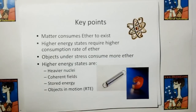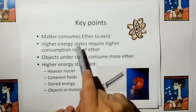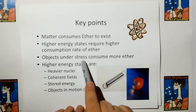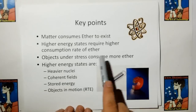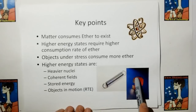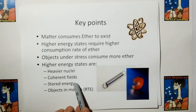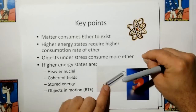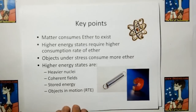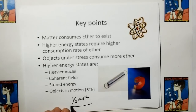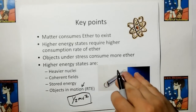Key points: matter consumes ether to exist. Higher energy states require a higher consumption rate of ether. Objects under stress consume more ether. Higher energy states include heavier nuclear states, coherent fields like the field emitted by a magnet, and stored energy — like if I pull on a spring, I have to maintain energy to keep it in that state. And because a higher energy state is also one-half mv squared, objects in motion have to consume ether at a higher rate as well.